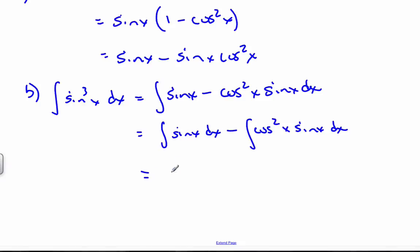I know that this is going to be cosx, a negative, because the derivative of negative cosine is positive sine, minus, well, I know this is going to be cosx cubed to the 1 third. The derivative of cosine is negative sine, so I have to deal with a negative sine, make that a positive.